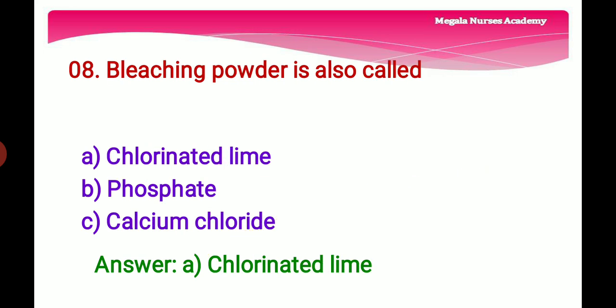Eighth question: Bleaching powder is also called — Option A: Chlorinated lime, Option B: Phosphate, Option C: Calcium chloride. The right answer is Option A, chlorinated lime. Calcium hypochlorite is an inorganic compound otherwise called bleaching powder, chlorine powder, or chlorinated lime, used for water treatment and as a bleaching agent.